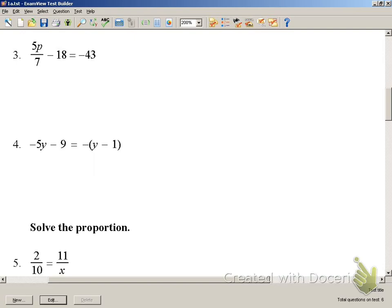I am going to get this term by itself by adding 18. So we have 5P over 7 is equal to a negative 25.